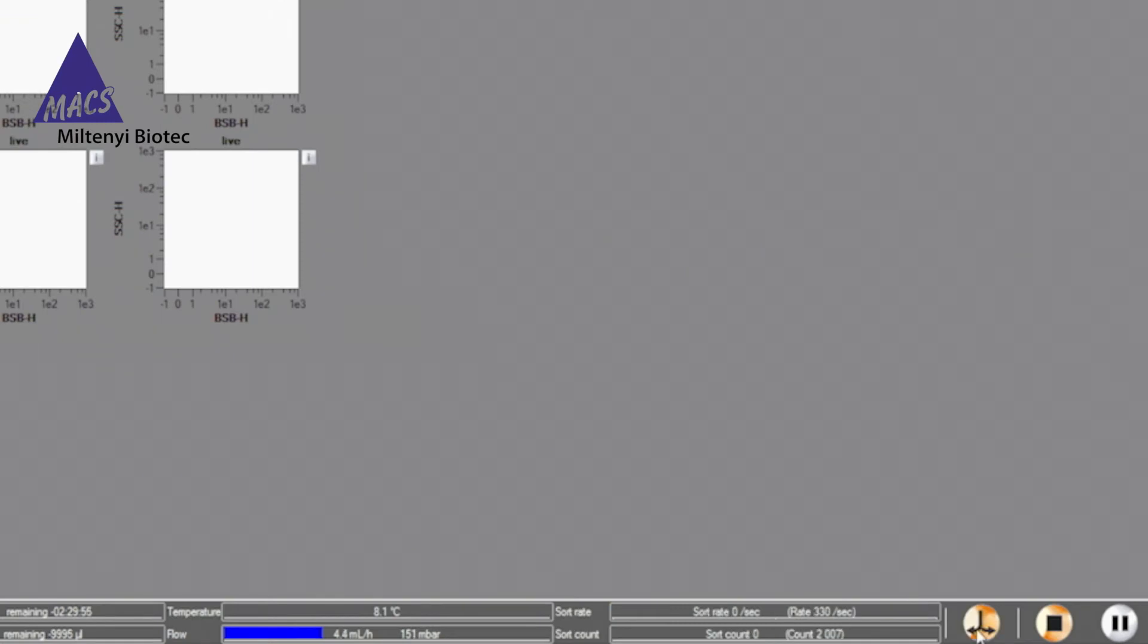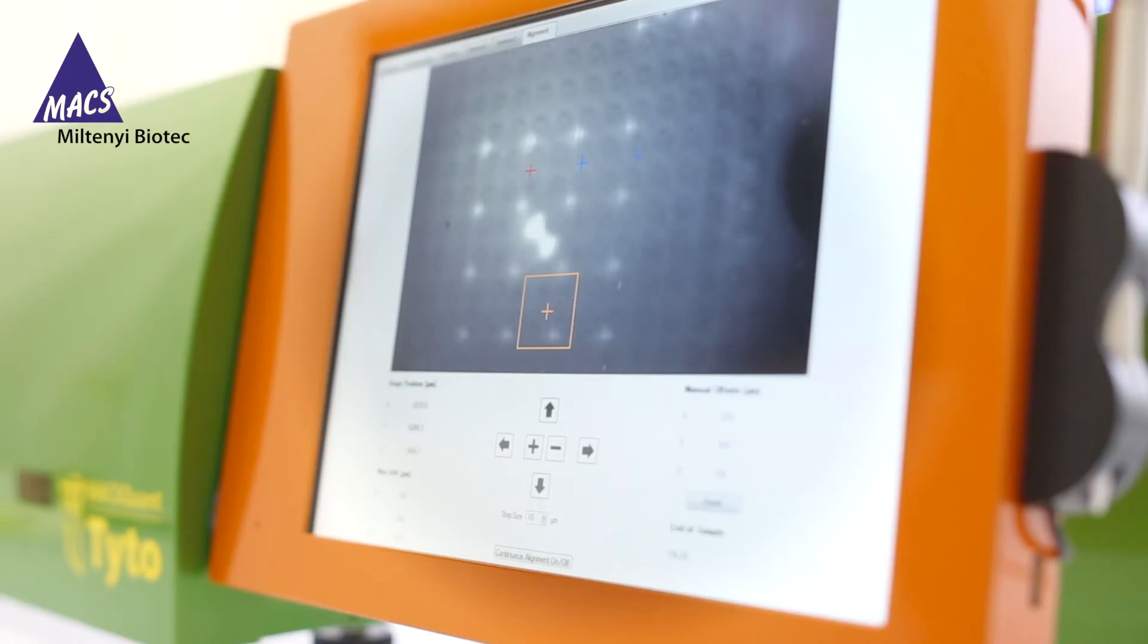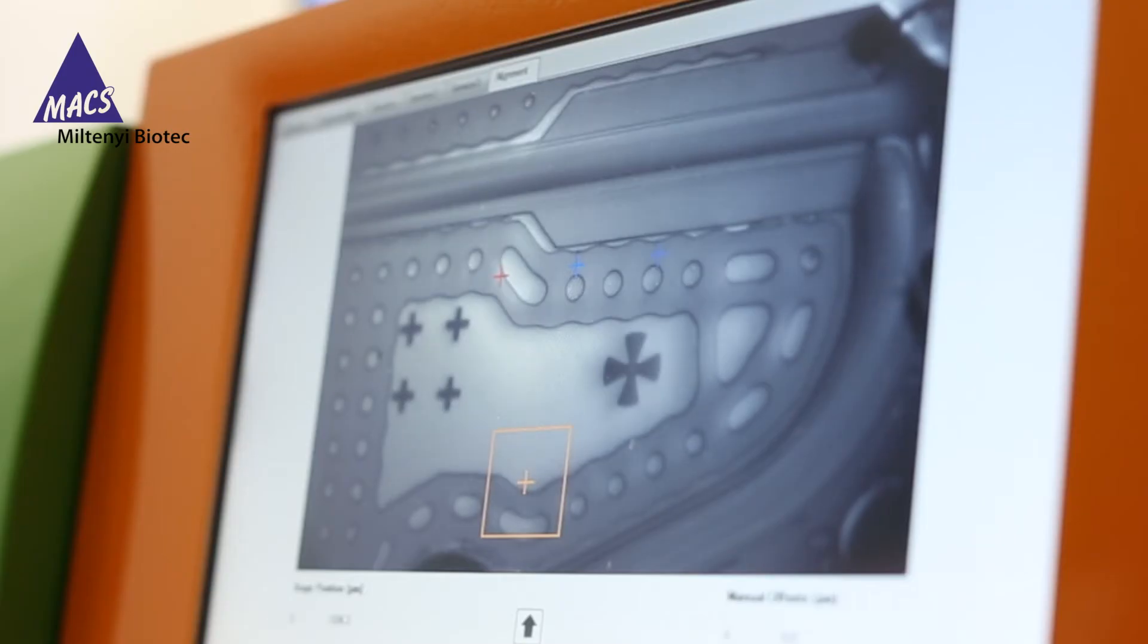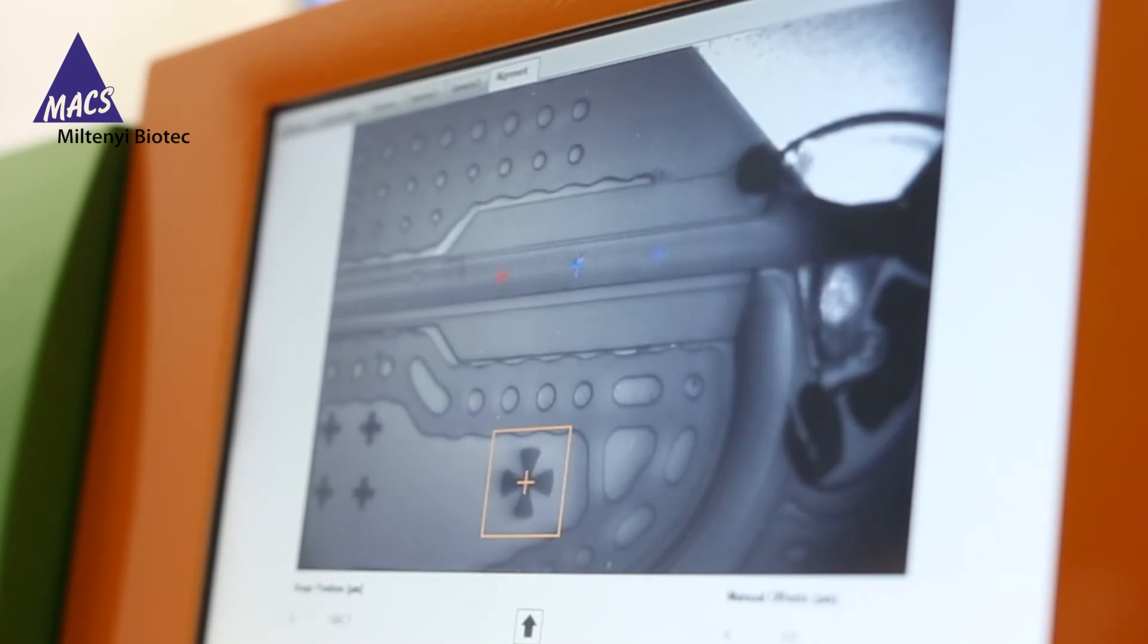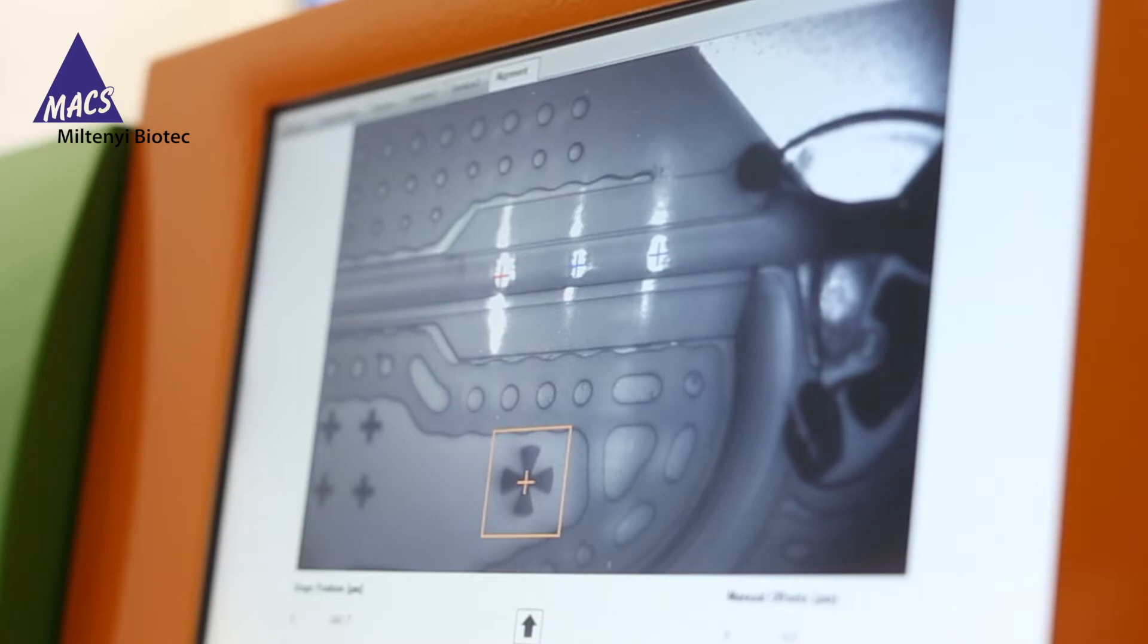After pressing the sort button, the instrument automatically initiates the laser alignment routine. Image recognition finds the precise laser interrogation position and the sort begins.